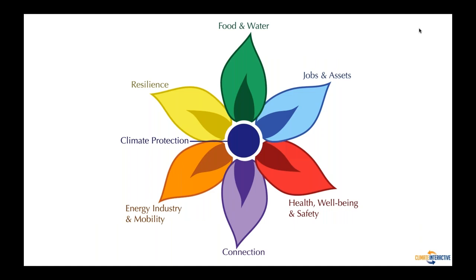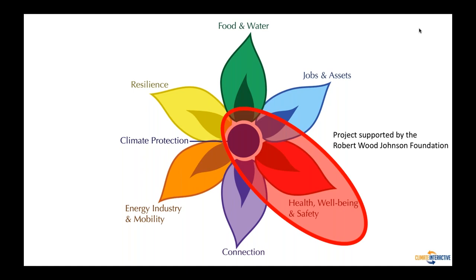Over the years we've done scans of the key benefits that come along with climate protection, and we developed one scheme to categorize those benefits. The six we focus on most are: food and water; jobs and assets; health, well-being, and safety; connection — meaning social connection between people, but also connection between people and nature; energy, industry, and mobility — how we make things and get around; and resilience to extreme events and other disruptions. In this report, we focus on really one of these petals: the intersection between long-term climate protection and health, well-being, and safety.